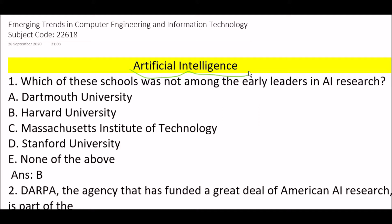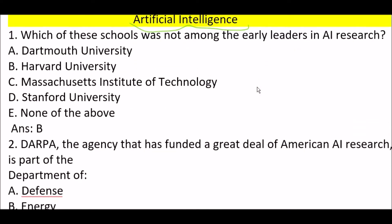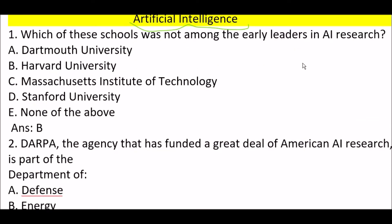Your first question is: which of these schools was not among the early leaders in AI research? Option A: Dartmouth University. Option B: Harvard University. Option C: Massachusetts Institute of Technology. Option D: Stanford University. Option E: none of the above. The right answer is Option B — Harvard University was not among the early leaders in AI research.